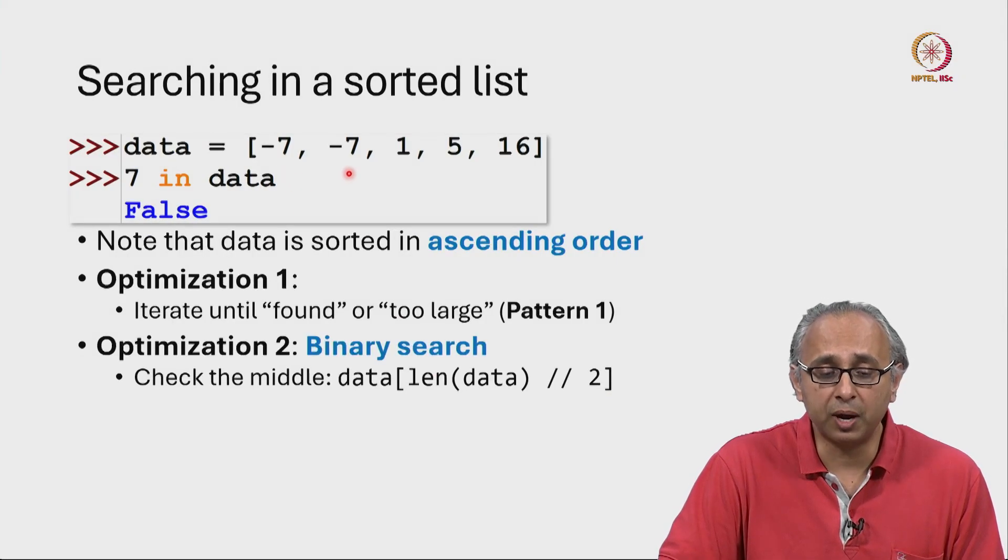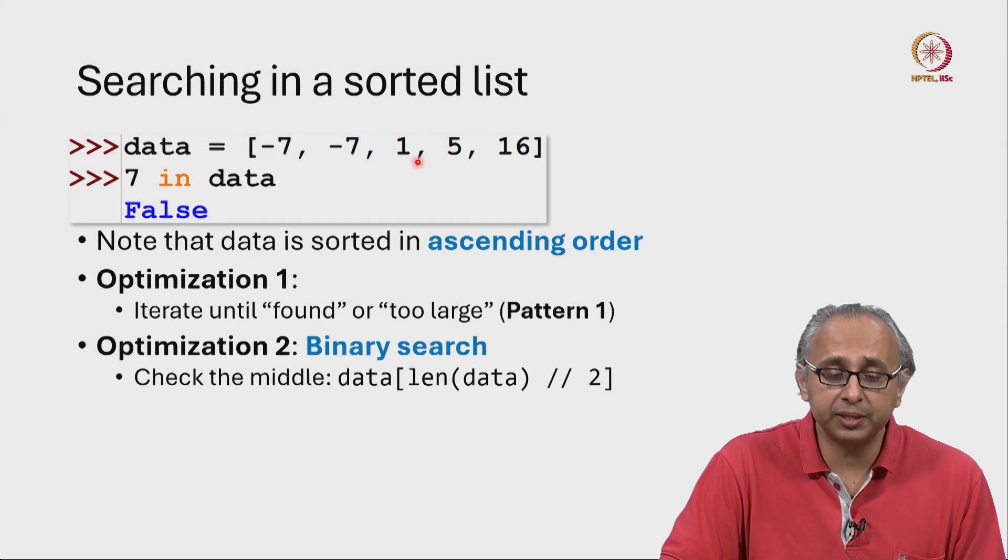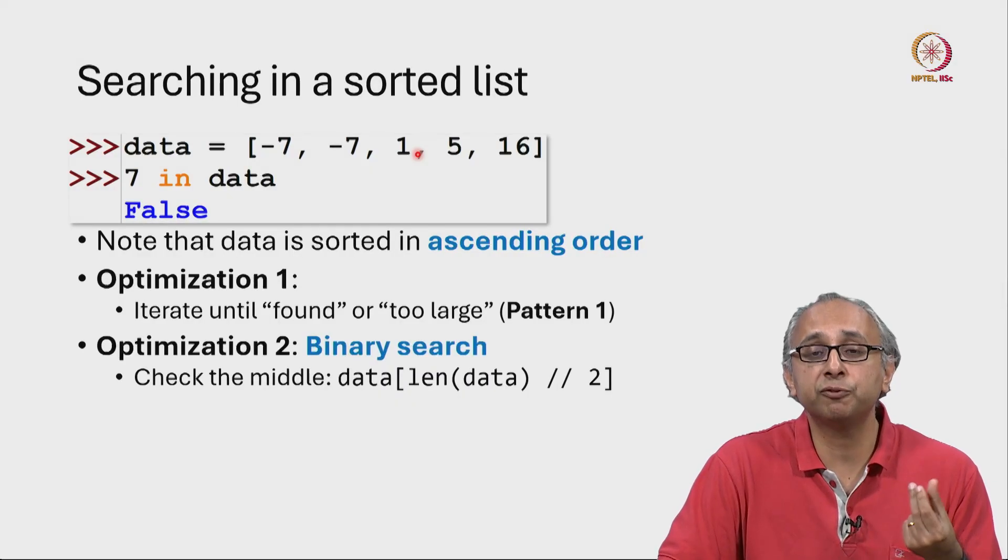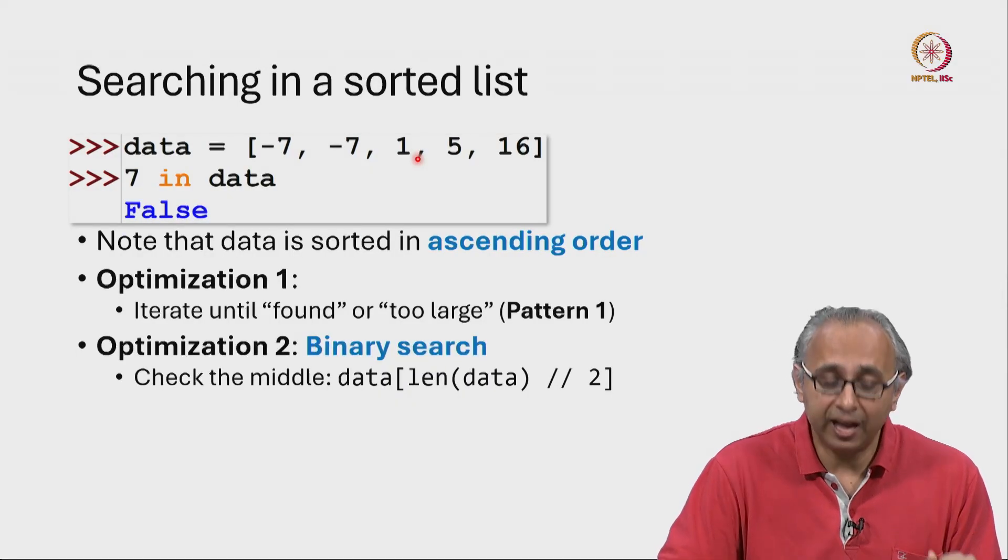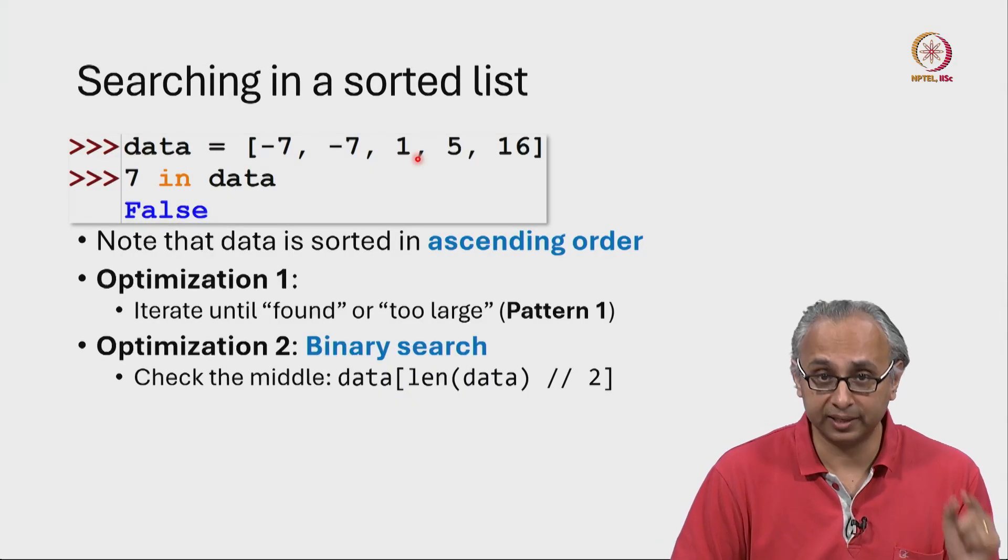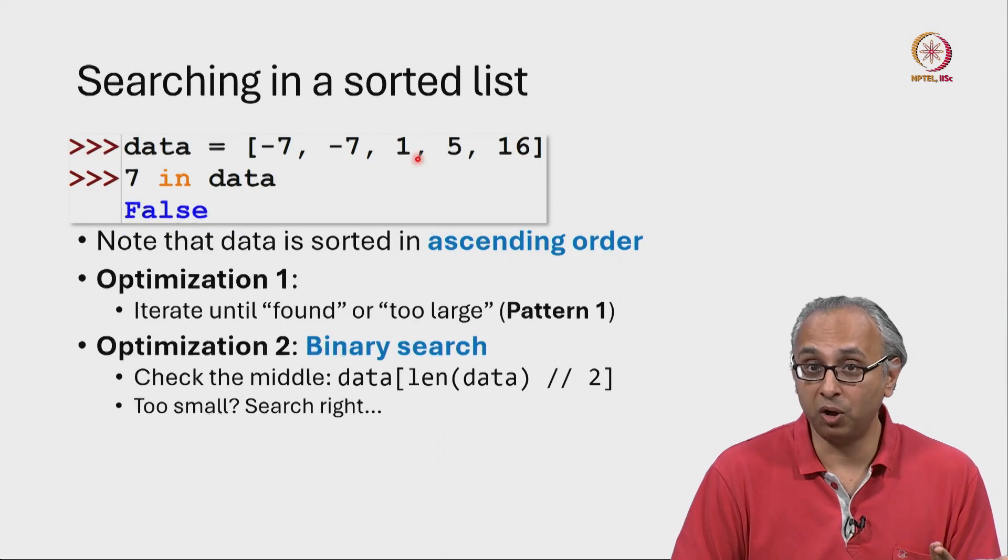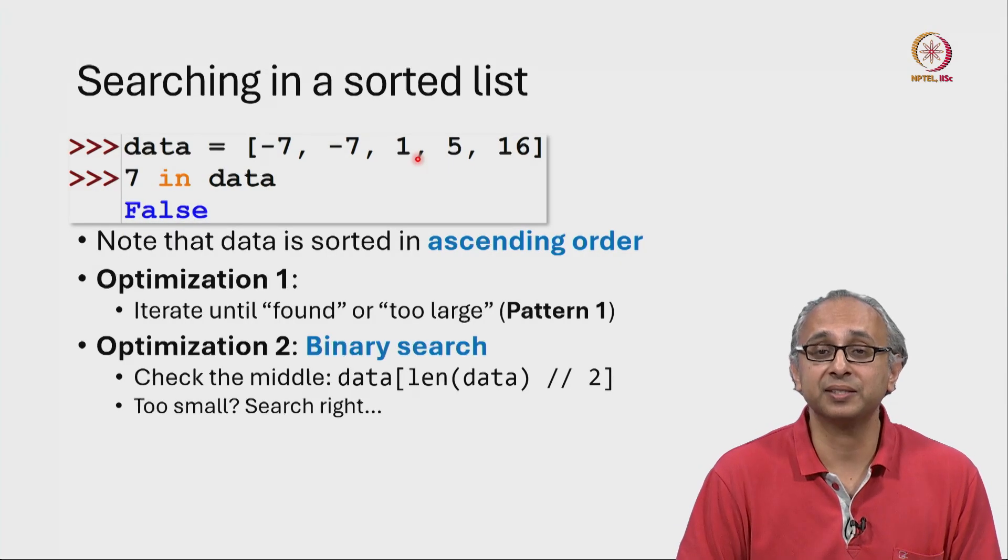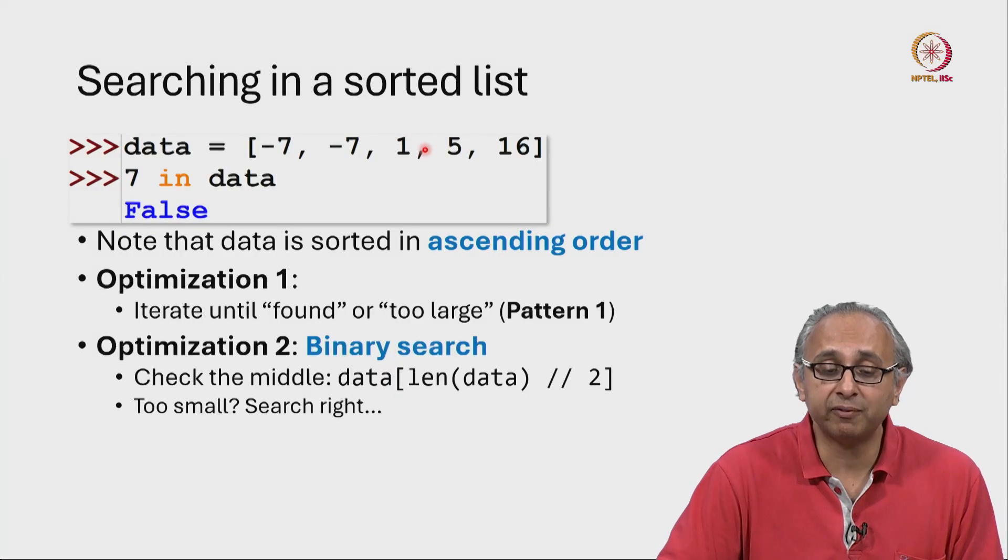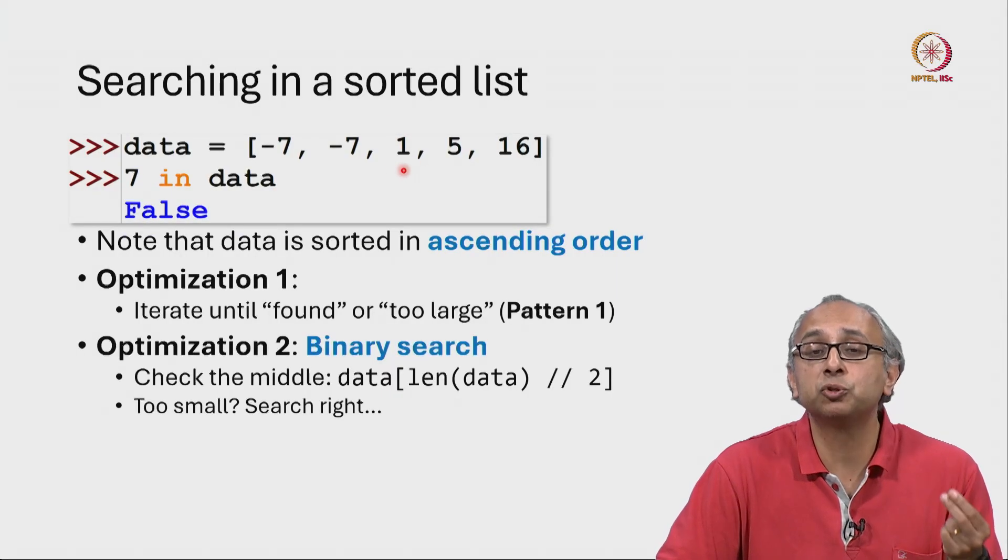This is 0, this is 1, this is 2. We would look at this index. Remember, we are searching for 7. The value at this index, this middle index, could be too small, like it is in this case.